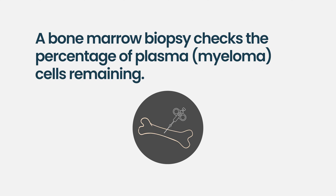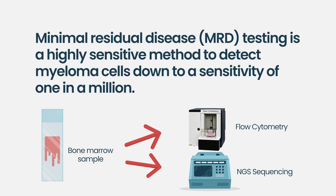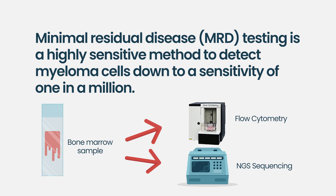In certain situations when we think the patient may be in a deep response, we use ultra-sensitive techniques to look for any myeloma cell — like looking for a needle in a haystack. Using these technologies we can get resolution of one in a hundred thousand to one in a million, meaning after looking at a million cells we can definitively say there is not even one myeloma cell. We call that MRD negativity — short for minimal residual disease.